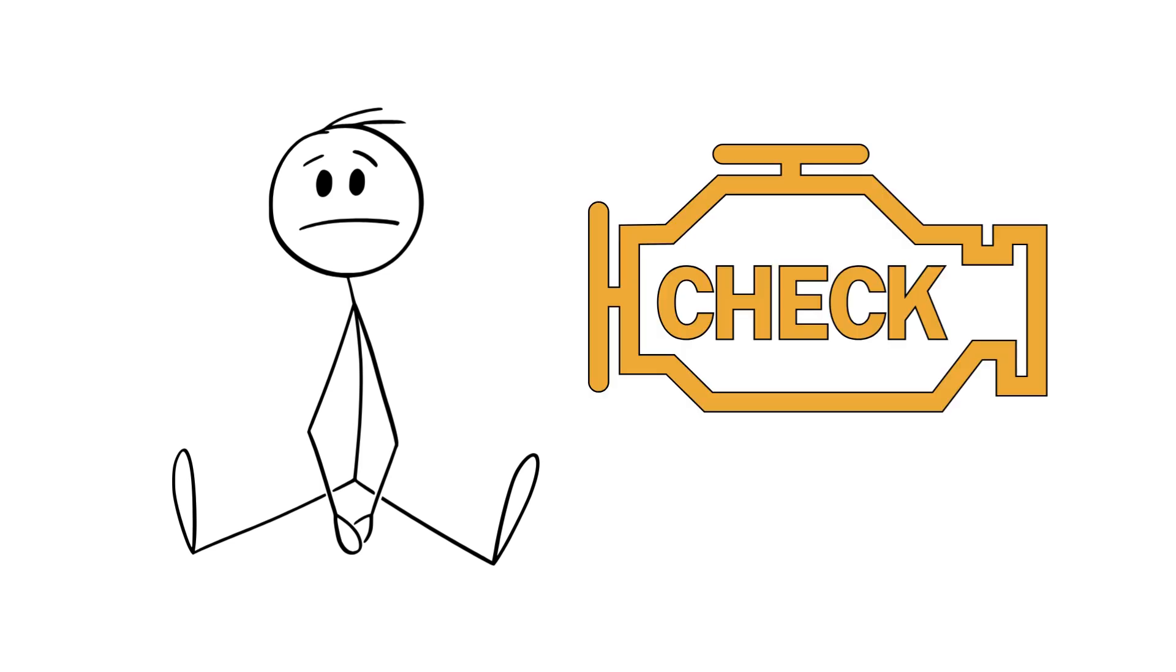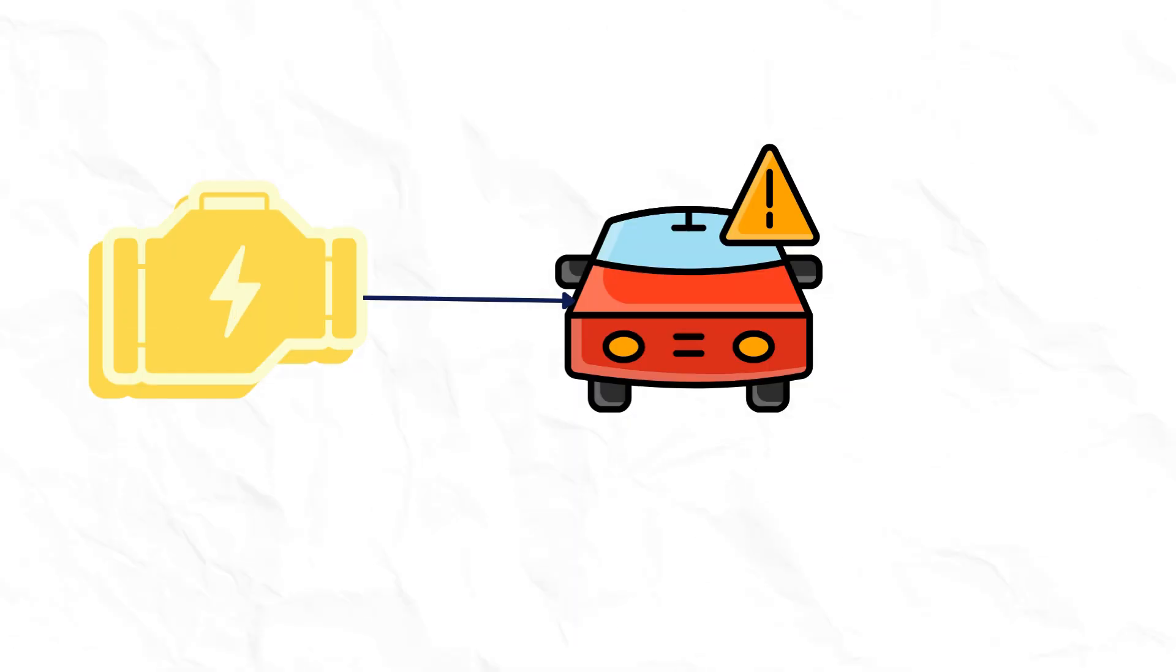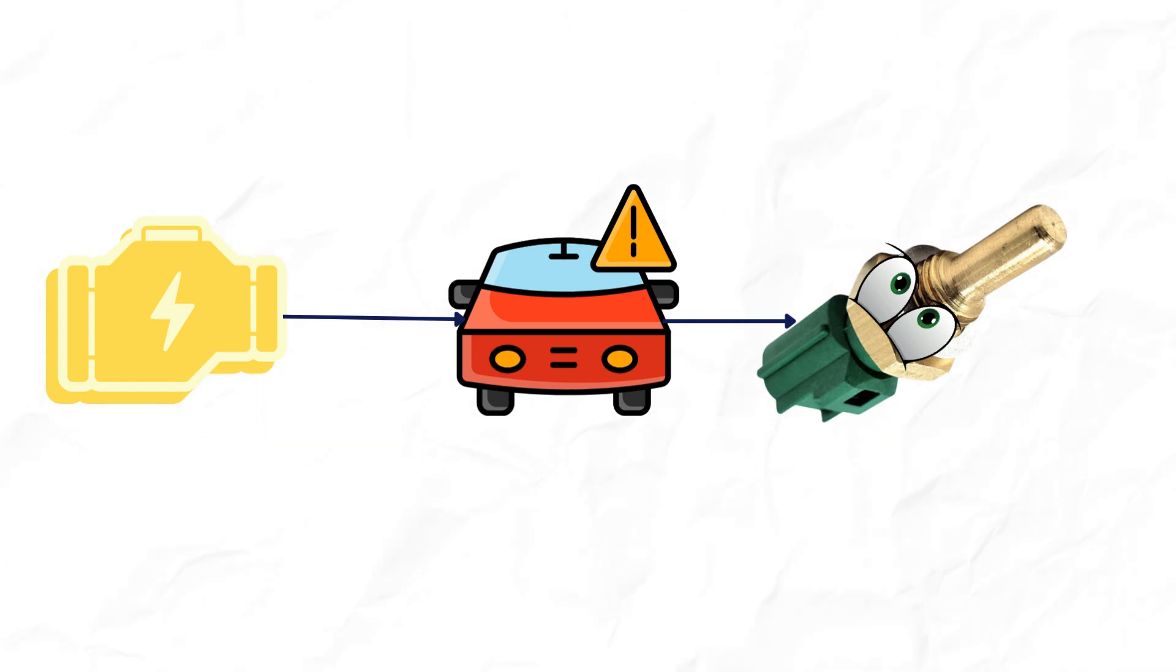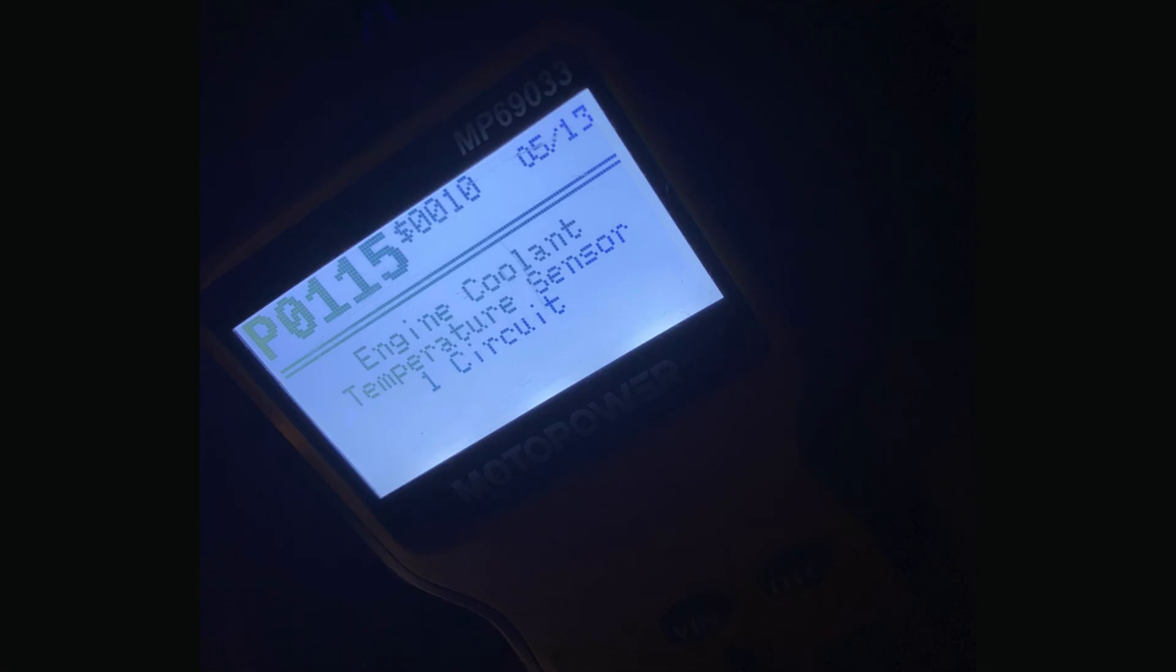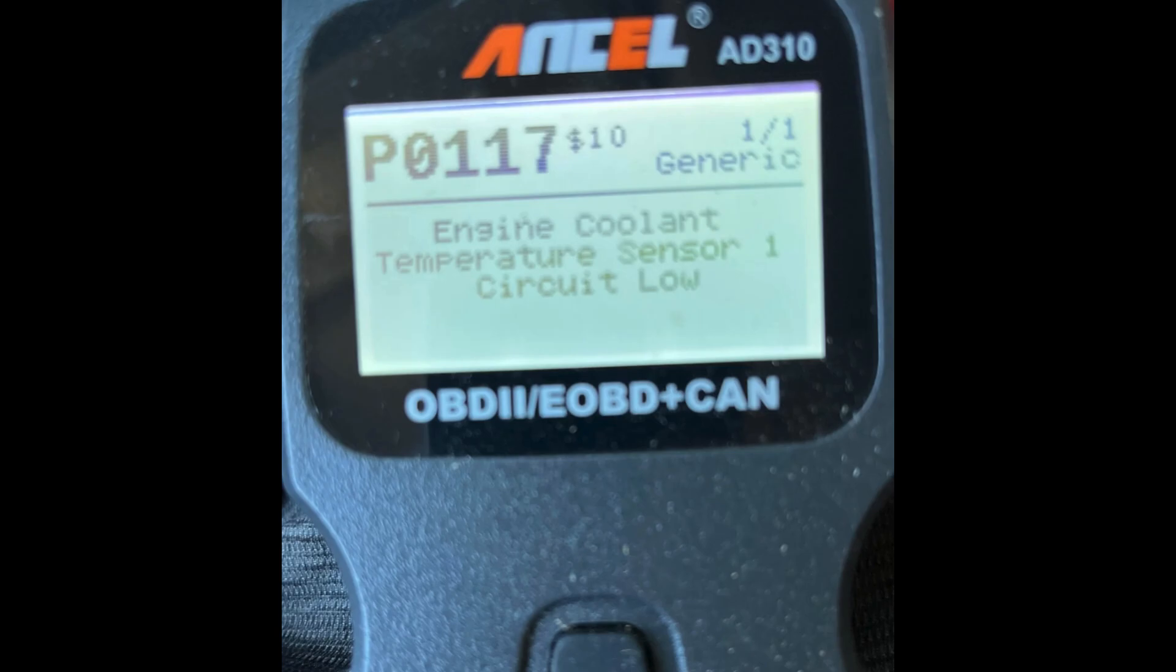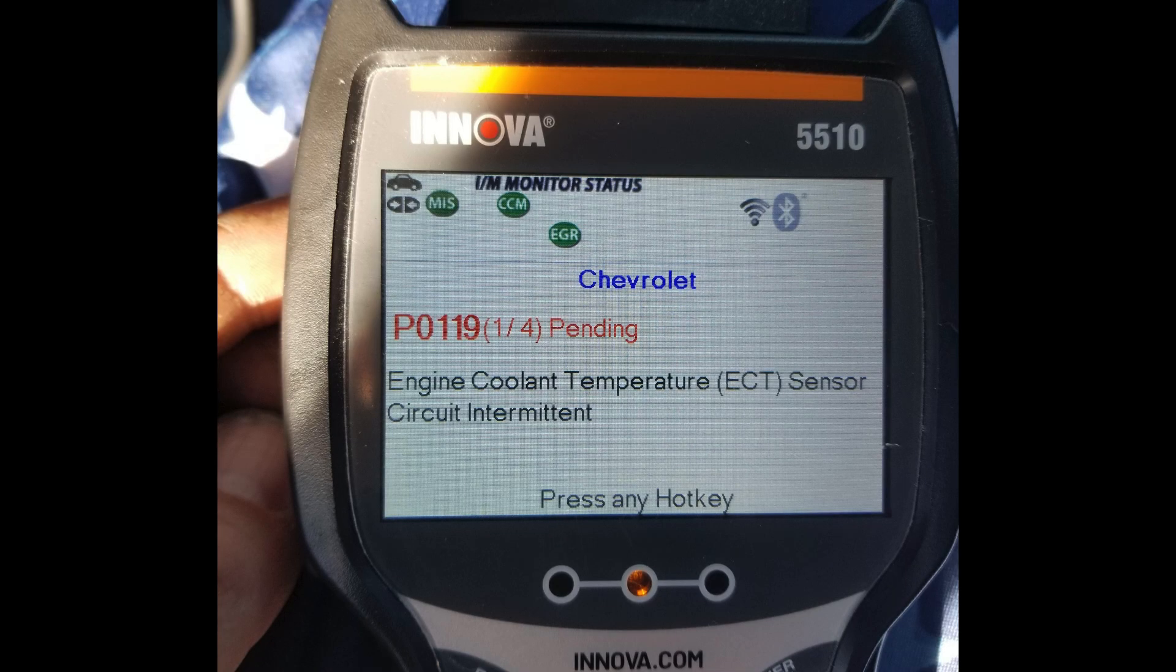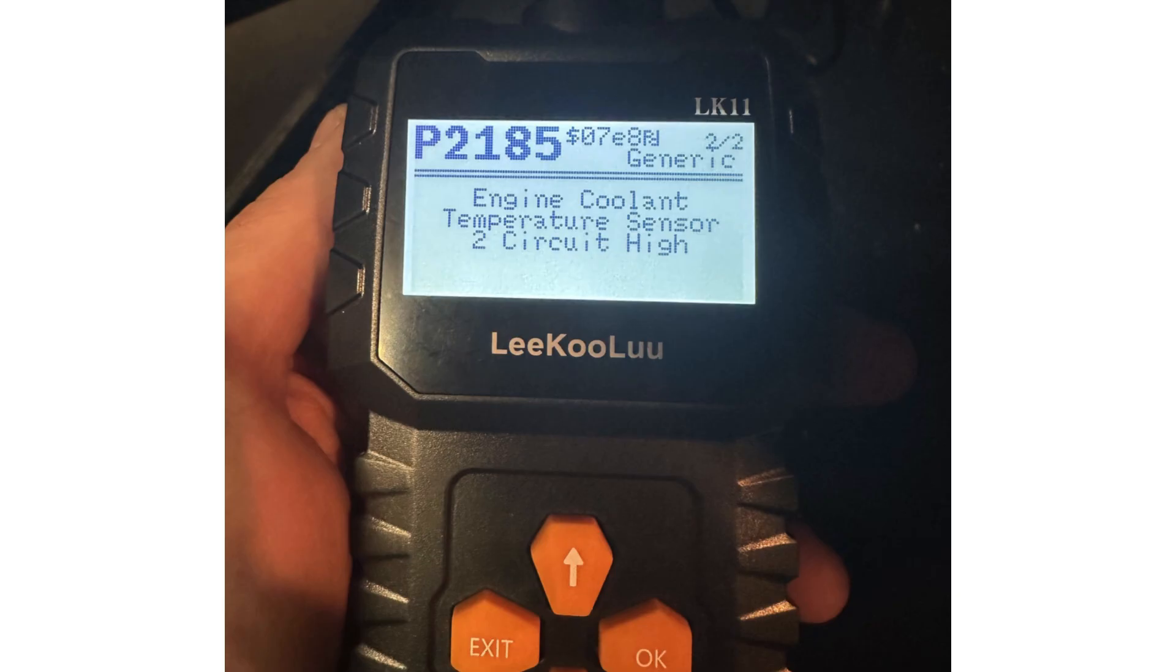And let's not forget about the check engine light. If you see it illuminated, it could be due to diagnostic trouble codes related to the engine coolant temperature sensor, such as P0115, P0116, P0117, P0119, or P2185.